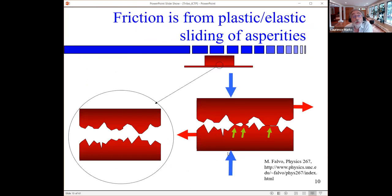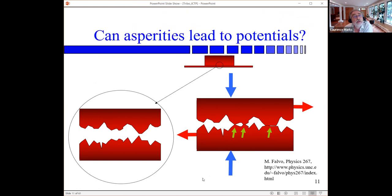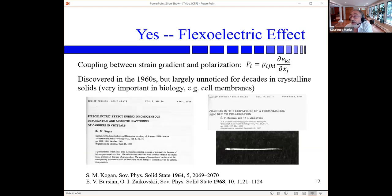Let's be more accurate. We know friction is truly plastic-elastic sliding — John gave us a nice revision of this. The question we have to ask is: when you have asperities, can you get potentials? The answer is yes, and it's been known since the early 1960s from two seminal papers. They were from Russia, so at that time nobody in the West saw them. What you have is that polarization is coupled to the strain gradient. Here is an early picture — a piece of strontium titanate actually vibrating when a potential is put across it.